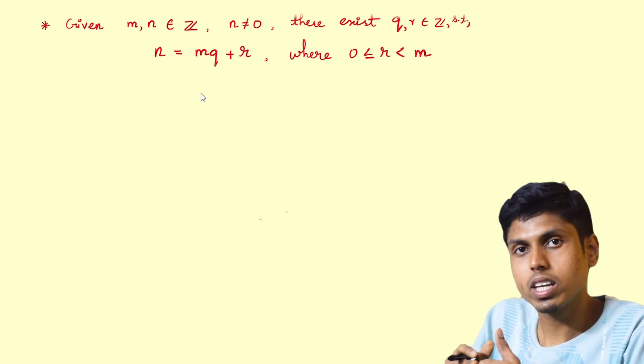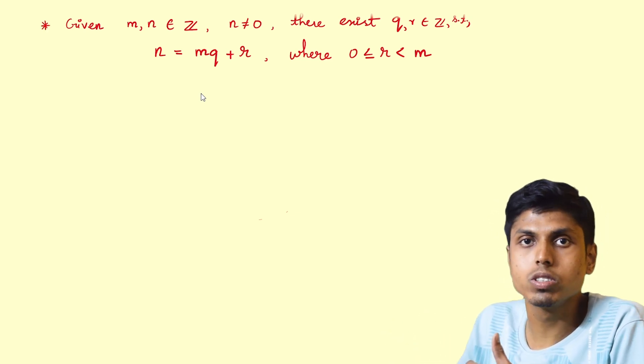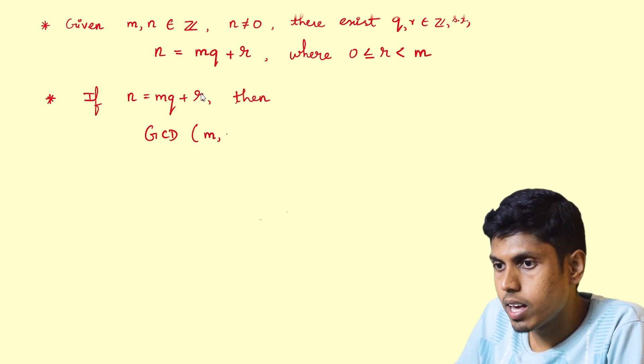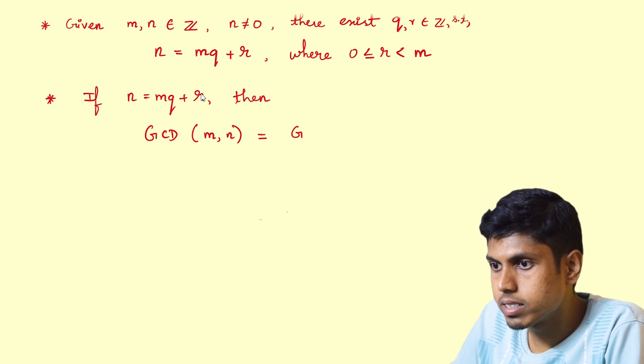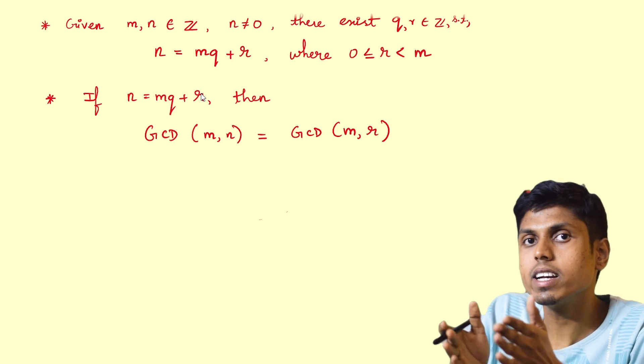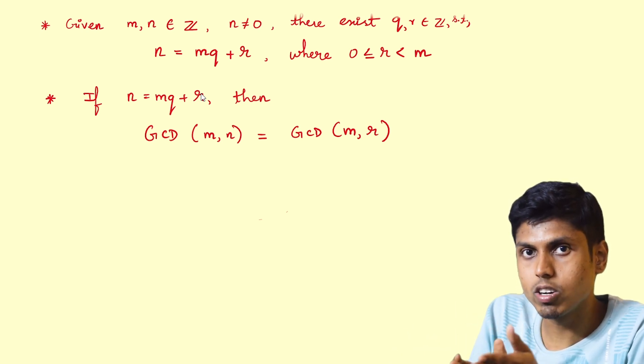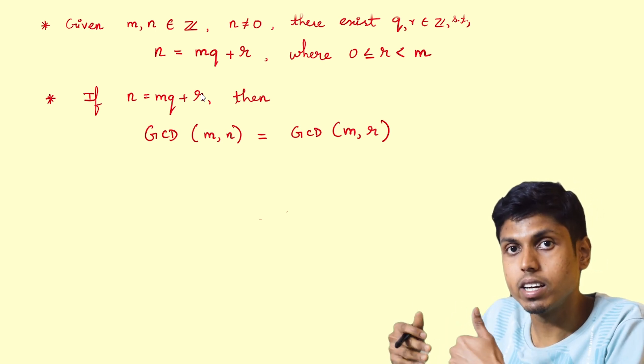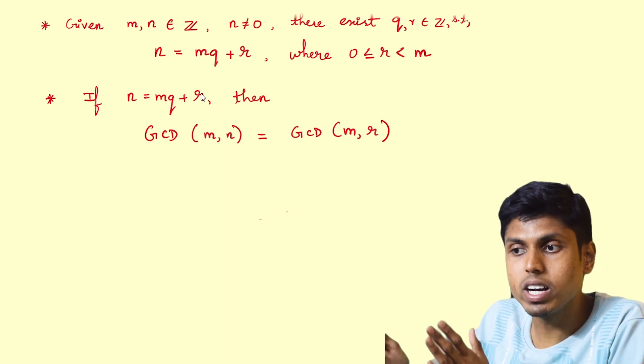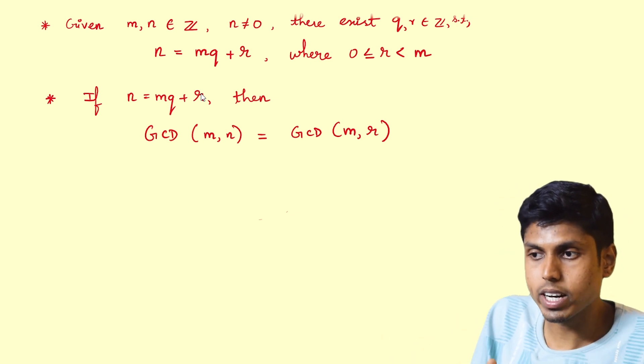Let's now move on to the next procedure towards Euclidean algorithm. If n equals mq plus r, then we say that GCD of m comma n equals GCD of m comma r. In other words, GCD of dividend and divisor equals GCD of divisor and remainder. GCD stands for greatest common divisor, which is also the highest common factor.